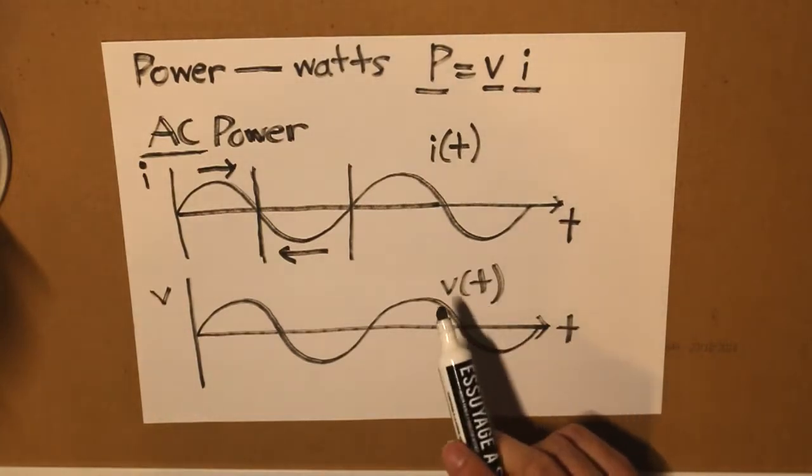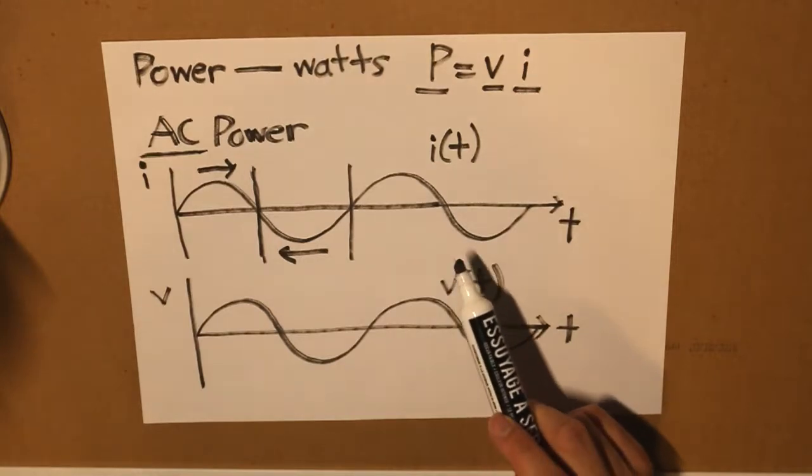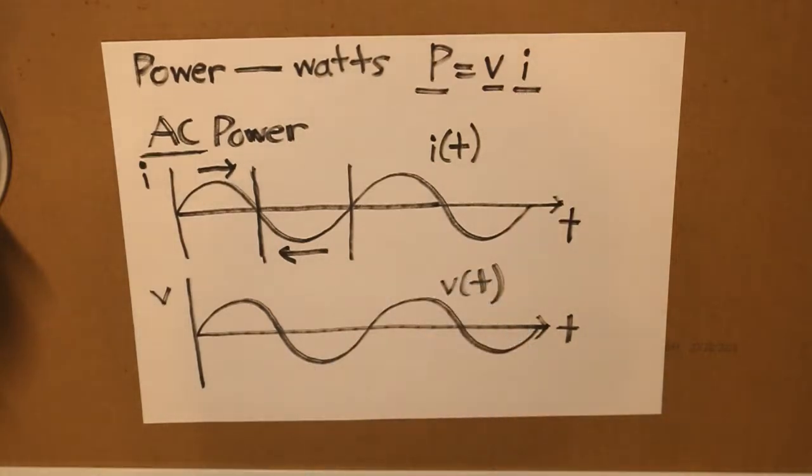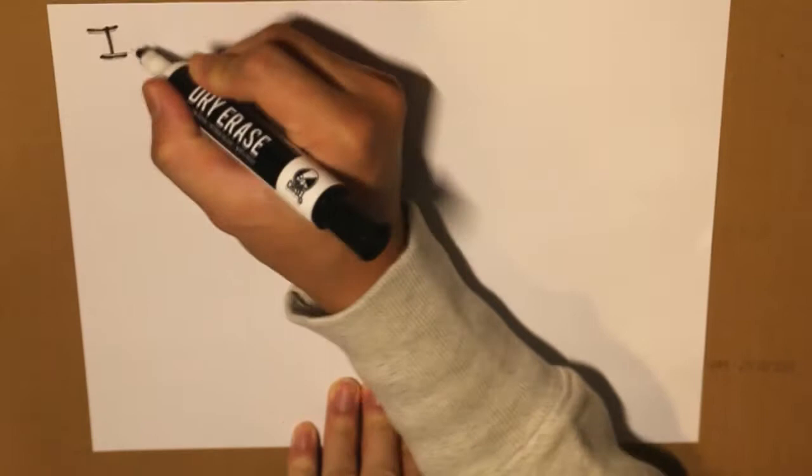So understanding that in AC we have alternating current, the power is going to change as well. That is why in this video I'm also going to be talking about instantaneous power.